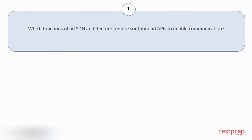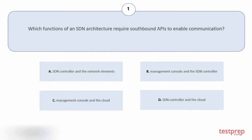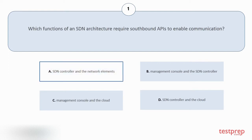Question number 1. Which functions of an SDN architecture require southbound APIs to enable communication? Your options are: A. SDN controller and the network elements. B. Management console and the SDN controller. C. Management console and the cloud. D. SDN controller and the cloud. The correct answer is option A.